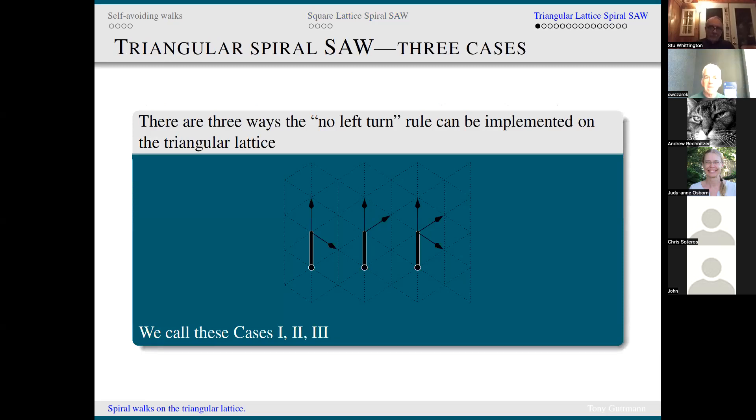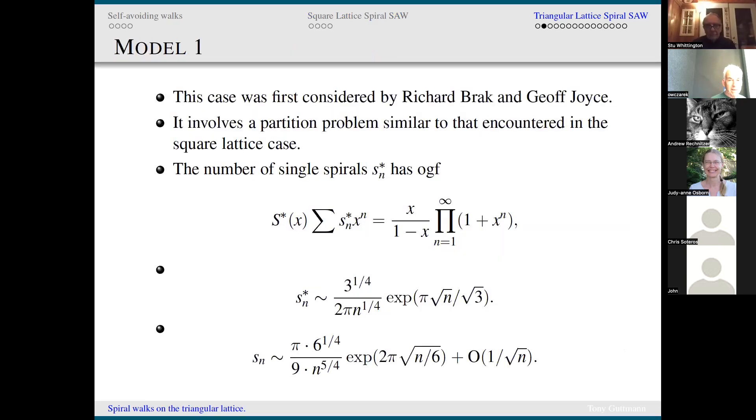This immediately suggested the triangular case. On the hexagonal case, the problem is totally trivial because you can only take five steps and that's the end of it. But on the triangular lattice, you have three possible cases. You can make the constraint that you can go straight ahead and turn through 120 degrees, or you can go straight ahead or turn through 60 degrees, or you can go straight ahead and turn through 60 and 120 degrees. We'll call these cases one, two and three. Case number one is what Richard considered together with Jeff Joyce back in the good old days.